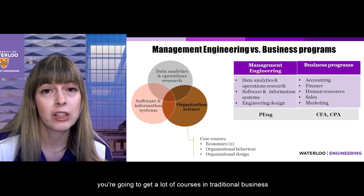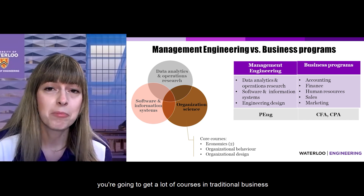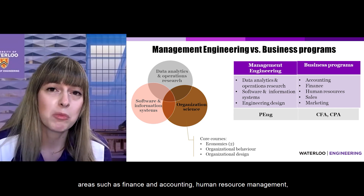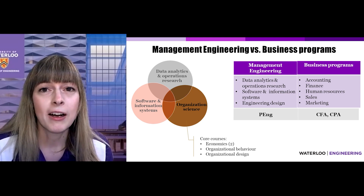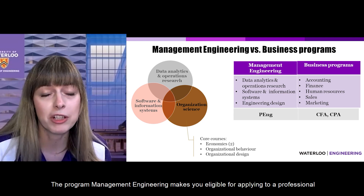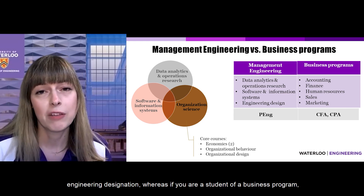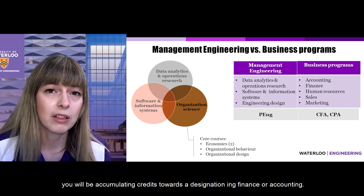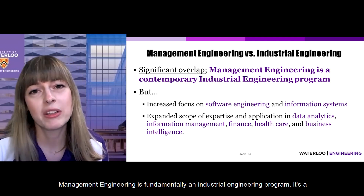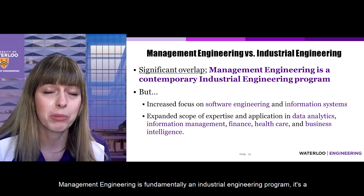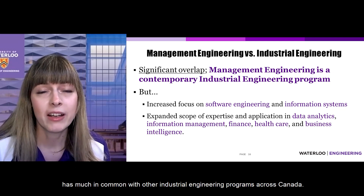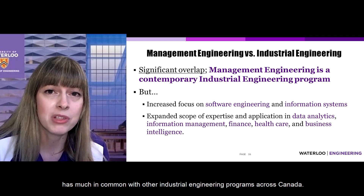In business programs, you get courses in traditional business areas such as finance and accounting, human resource management, and sales and marketing. Management engineering makes you eligible to apply for a professional engineering designation, whereas business students accumulate credits towards a designation in finance or accounting. Management engineering is fundamentally an industrial engineering program — a contemporary and modernized version of that discipline — and has much in common with other industrial engineering programs across Canada.